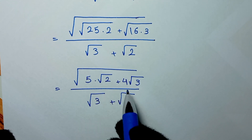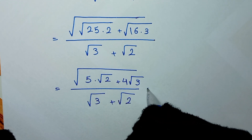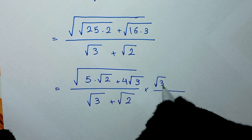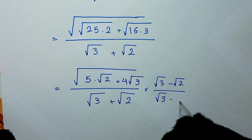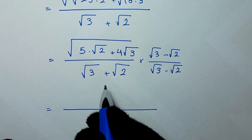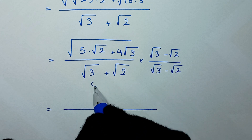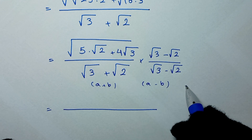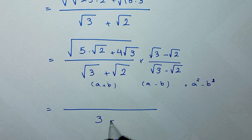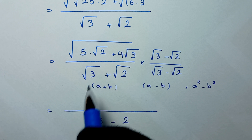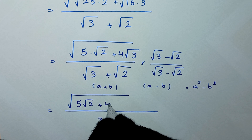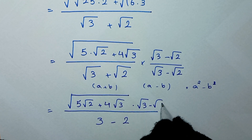Here we rationalize this fraction and we multiply by the denominator's conjugate pair. The conjugate pair is square root of 3 minus square root of 2, over square root of 3 minus square root of 2. The denominator is of the form (a + b)(a - b), which equals a squared minus b squared. So it will be square root of 3 squared minus square root of 2 squared, which is 3 minus 2. For the numerator we have 5 square root of 2 plus 4 square root of 3, times square root of 3 minus square root of 2.